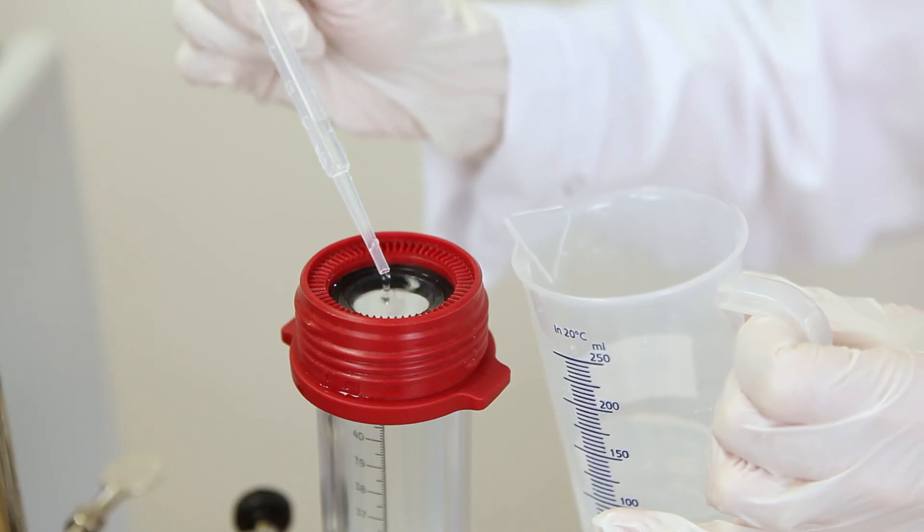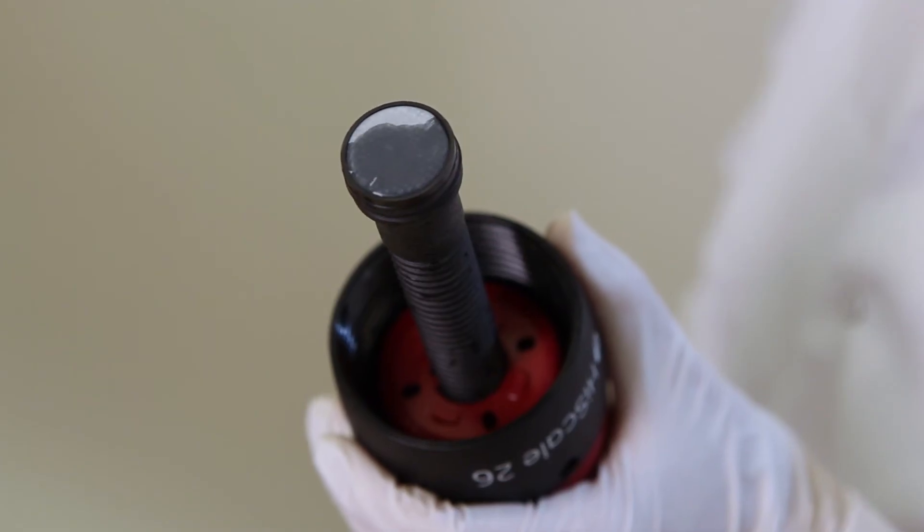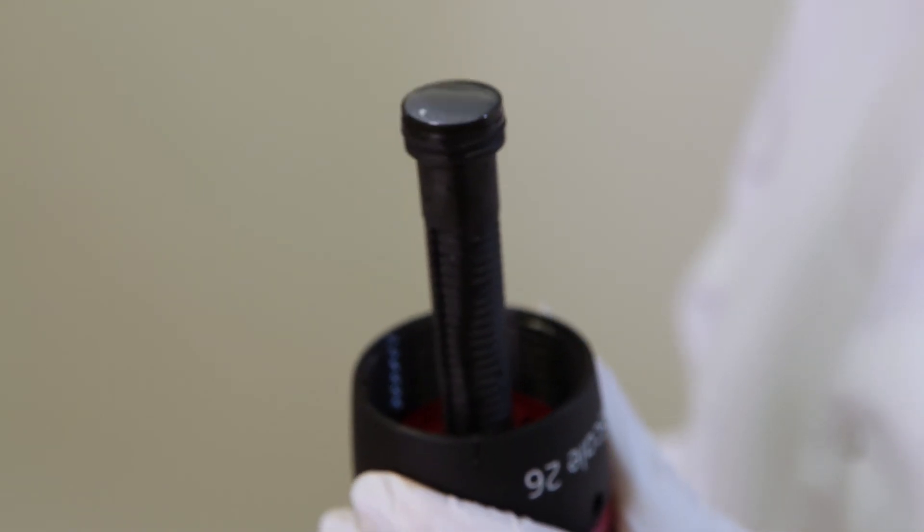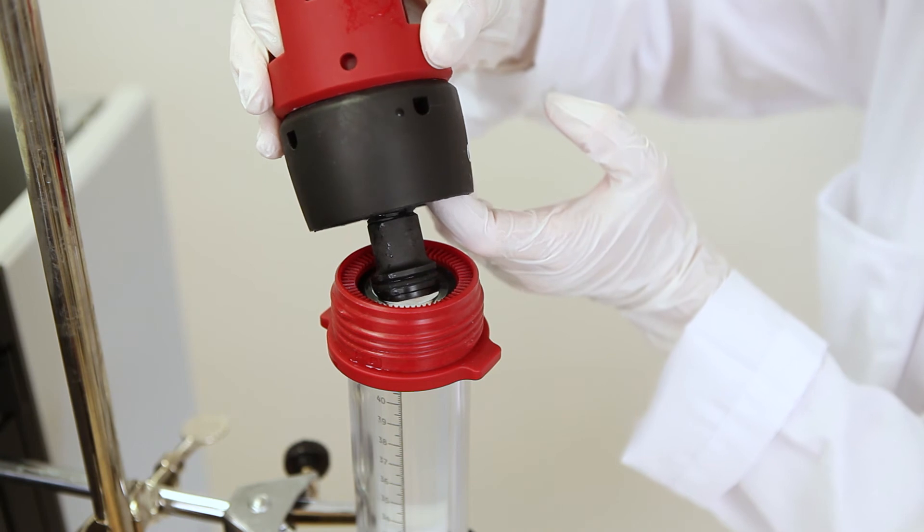Add packing solution to form a meniscus at the top. Before inserting the adapter into the column, be sure to remove all air with 20% ethanol, and then insert it at a 45-degree angle, as described before.